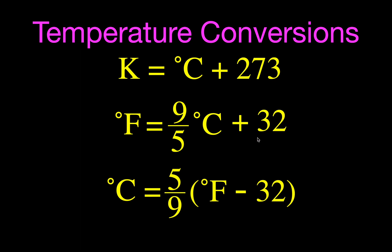The third equation converts Fahrenheit to Celsius: degrees Celsius equals the Fahrenheit temperature minus 32, times five, divided by nine. Remember the parentheses — use order of operations, do the subtraction first, then multiply by five and divide by nine.